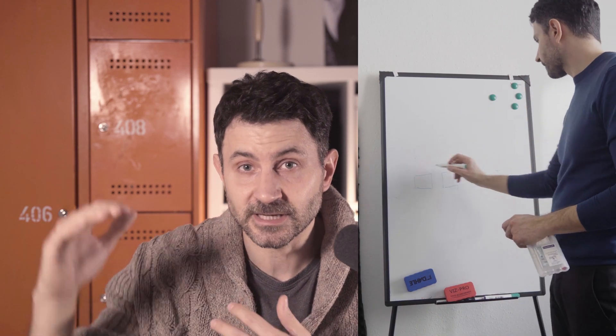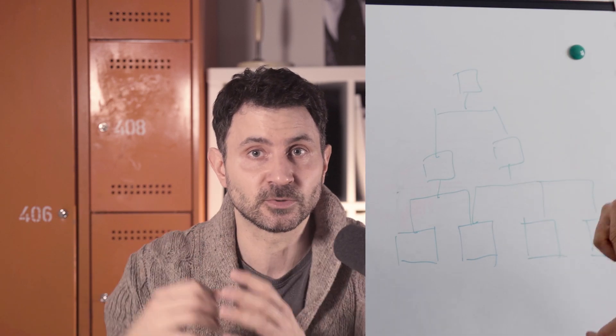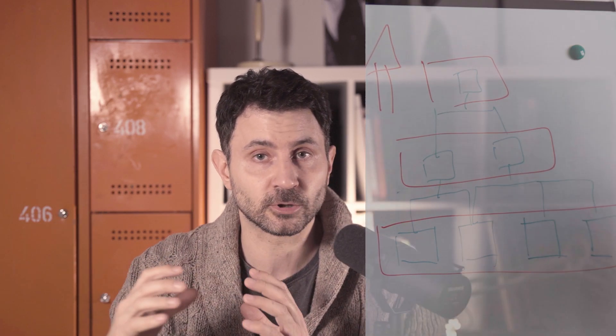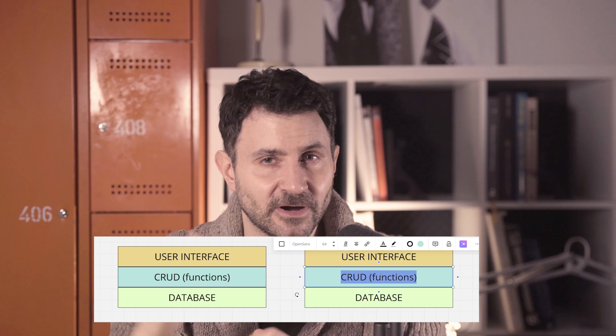When I automate, I create my own functions using existing ones. Writing software starts with the simplest possible functions — zeros and ones — and groups them into increasingly complex functions. At some point software developers stop, thinking users don't need more. Then we come in and add layers on top. Now, AI will try and eventually succeed to eliminate this second layer and drastically simplify the third layer.